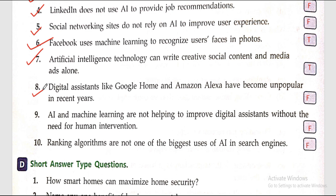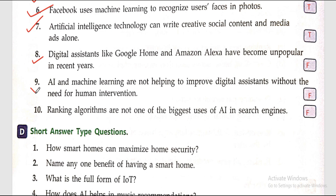Question eight: digital assistants like Google Home and Amazon Alexa have become unpopular in recent years. False. Question nine: AI and machine learning are not helping to improve digital assistants without the need for human intervention. False. Question ten: ranking algorithms are not one of the biggest uses of AI in search engines. False. Those are the objective questions.